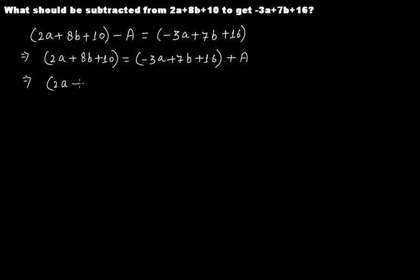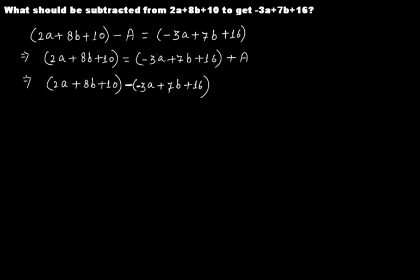Now bring the expression minus 3a plus 7b plus 16 toward the left. Since it was positive inside the bracket, when it moves to the left it becomes negative. So A equals 2a plus 8b plus 10 minus the quantity minus 3a plus 7b plus 16.